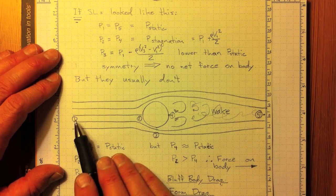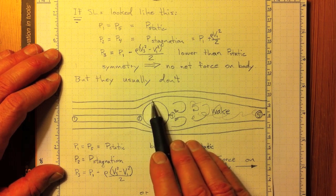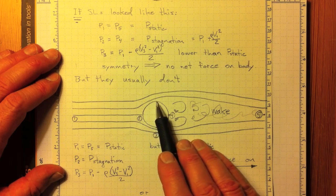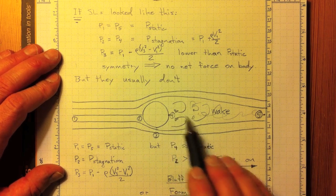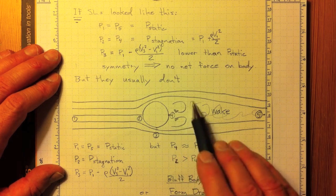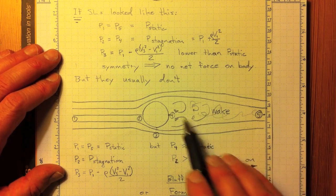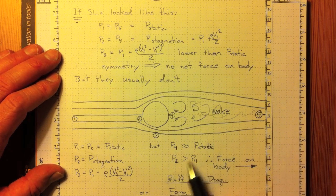More realistically, what we see is location 1, stagnation point at location 2, flow accelerates over the front half of the body, and then there's some kind of separation, swirl, and a wake that happens in behind the body.